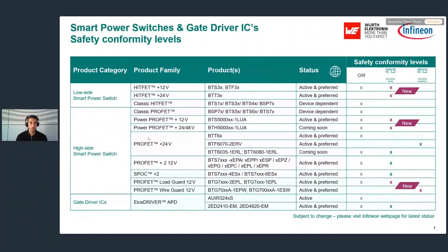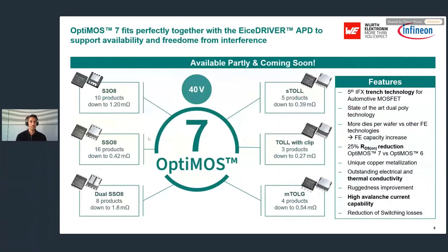Infineon has a broad portfolio to offer here. Many of our smart power switch product families are already ISO 26262 ready or even compliant, and any new devices in these families will be completely ISO compliant. This means they not only technically allow the shift to ASIL systems, but are also pre-certified, enabling faster functional safety design. We may also go for gate drivers and corresponding MOSFETs — again a very broad portfolio — to cover the interaction of semiconductors and passive components.